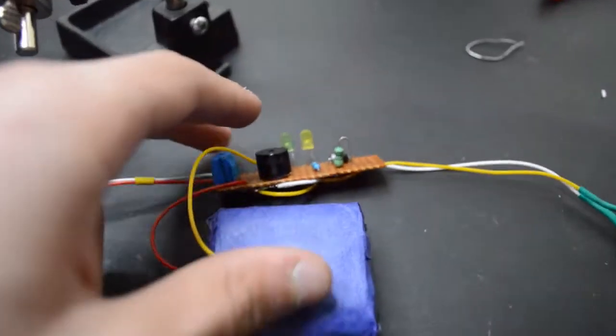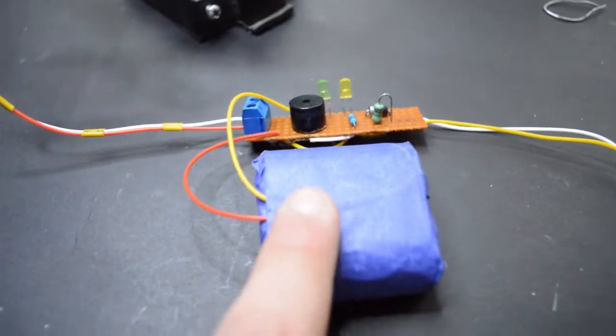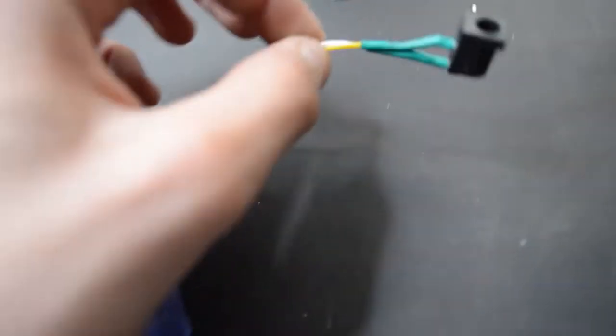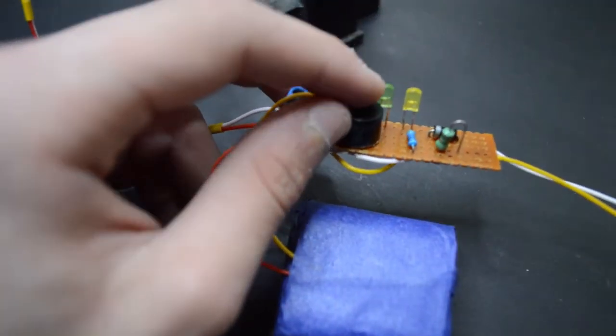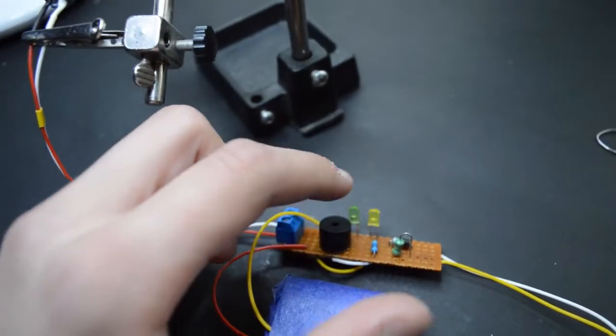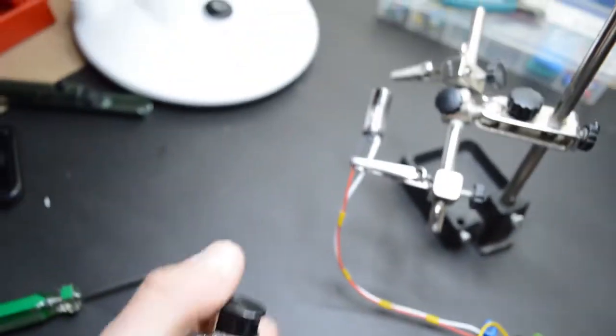So guys I finished it all. Here it goes, the power supply for charging the battery. I'm using five volts for charging at one amp current. When it's charging this green light will turn on, and when there's fire this buzzer will turn on and this yellow light. So let's try it with the lighter.